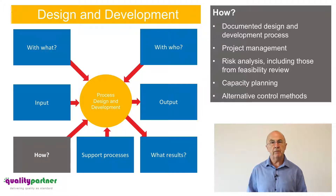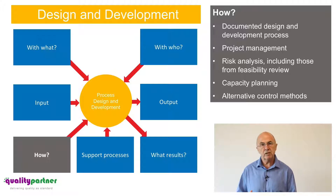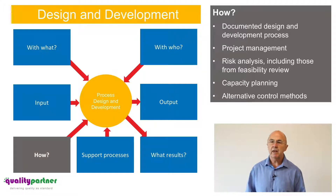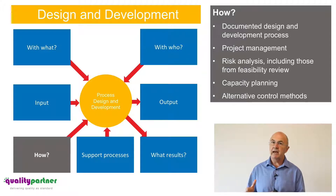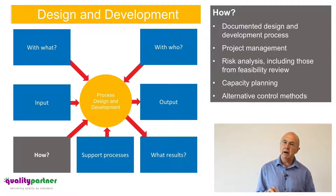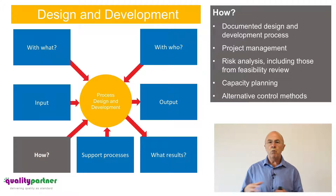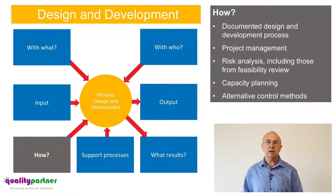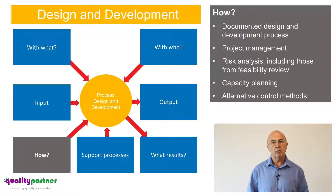One fundamental requirement when designing a new manufacturing process is making sure we understand the capacity requirements identified during the sales process and that we are designing a manufacturing process capable of meeting those capacity requirements. We also need to think about alternative process controls — for example, if an automatic camera detection system fails, what would be the backup system to keep production going? There is a whole new requirement about alternative control methods, and we need to proactively think about this during process design and development.